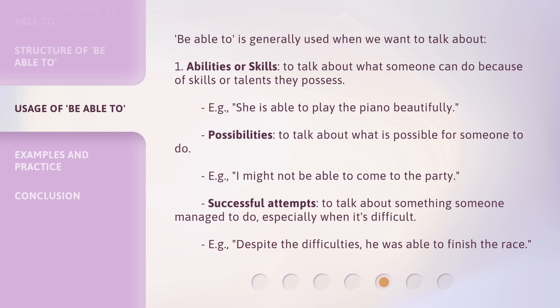'Be Able to' is generally used when we want to talk about three things. First, abilities or skills — to talk about what someone can do because of skills or talents they possess. For example: She is able to play the piano beautifully. Second, possibilities — to talk about what is possible for someone to do. For example: I might not be able to come to the party. Third, successful attempts — to talk about something someone managed to do, especially when it's difficult. For example: Despite the difficulties, he was able to finish the race.